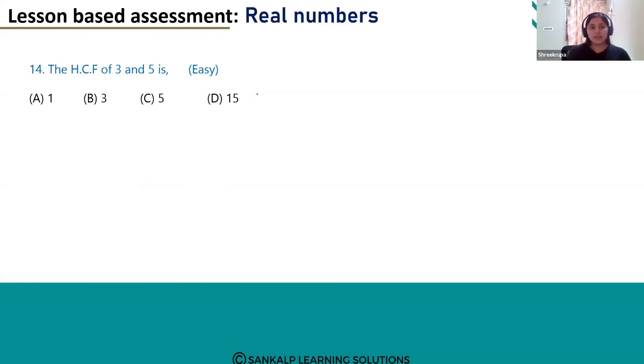Hello everyone. Let's see the 14th question. The HCF of 3 and 5 is. Here we have to find out the HCF of 3 and 5, but both 3 and 5 are prime numbers.